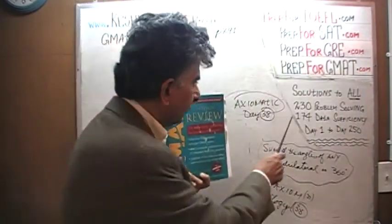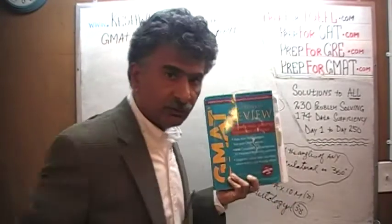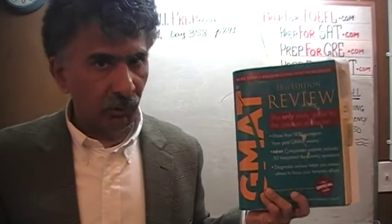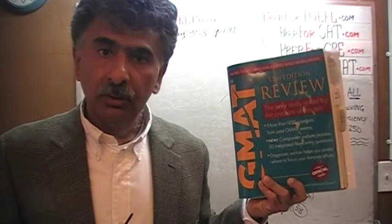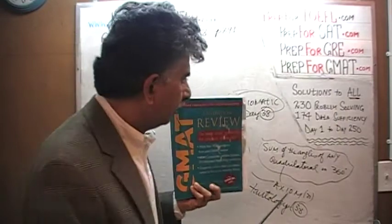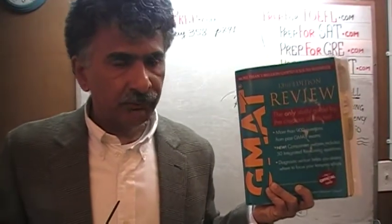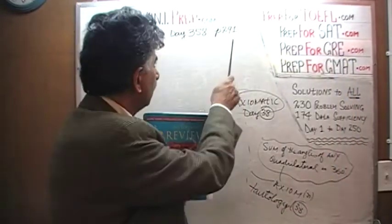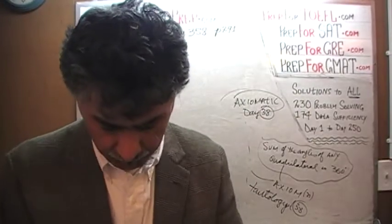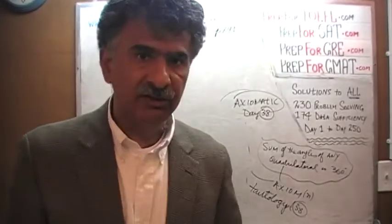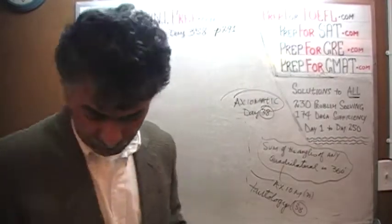The book contains 230 problem-solving questions and 174 data sufficiency questions. We have already solved all the math problems from this book. If you are interested in watching any of the original solutions, you will find them from day number 1 through 250. Right now we are in the process of redoing the problems and we are on page number 291. Please turn to it — problem number 169 is what we are about to do.